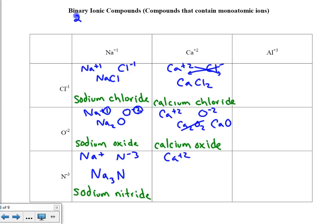Calcium and nitride. Crisscrossing here, the formula becomes Ca₃N₂. The name of this compound is calcium nitride.